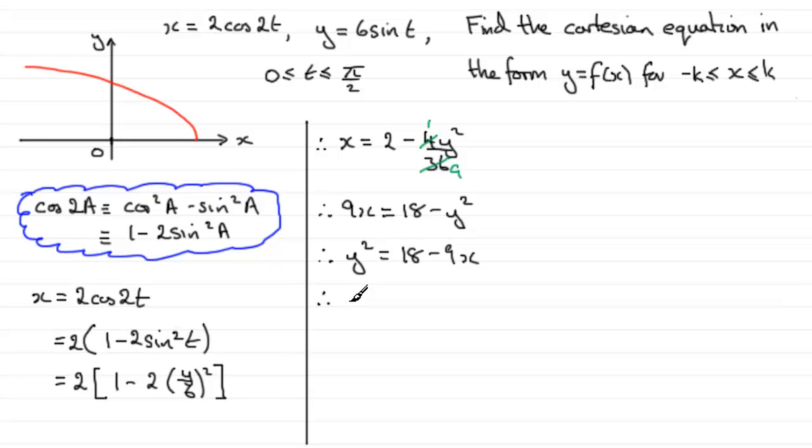So you, therefore, have y² equals 18 minus 9x. And it's a good idea at this stage, I think, to factorize this. You can see that we could pull out 9 as a common factor. And so you've got 9 multiplied by 2 minus x. So when it comes to finding y,